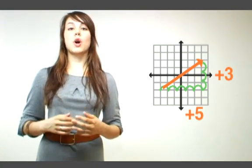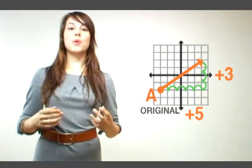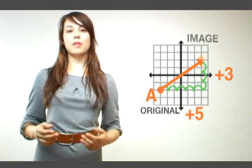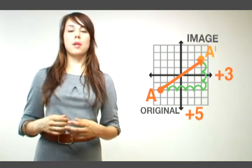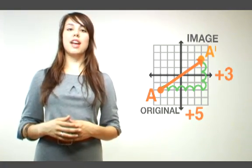The first point is called the original. Let's call this point A. The new point, as a result of the translation, is called the image. It is represented by the same letter with a small bar next to it, called prime. So our image is called A prime. Eric, Bobby, example please.